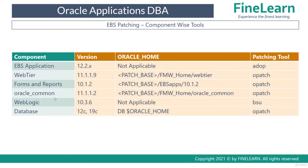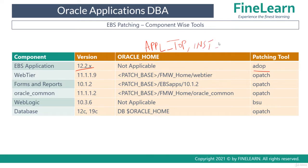So what are all the components you have to patch in eBusiness Suite? The eBusiness Suite application itself — that is your application tier — should be patched using a tool called ADOP, which is applicable for version 12.2.x. These patches basically update the APPL_TOP where all product-related files are, and also update INST_TOP related to configuration. They can even update some files in FSNP. Importantly, patches applied using ADOP will not impact or modify the technology stack — that is the database or Fusion Middleware.